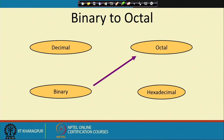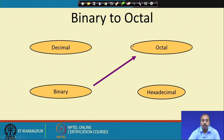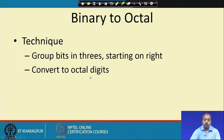Now the other way: binary to octal. How can we do this? One possibility is that you convert the binary number to decimal and from decimal you go to octal. That is one avenue, but that requires 2 conversions. However, that is not required — you can do it directly.